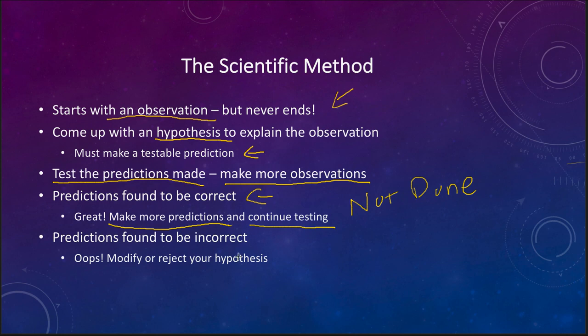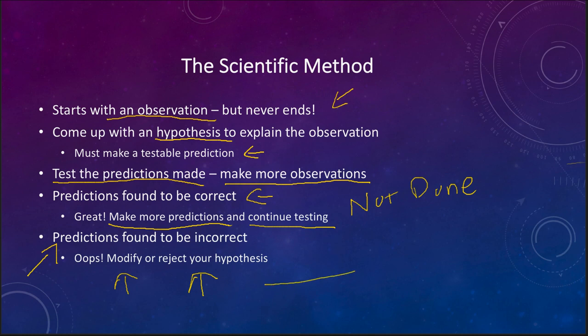Or you may find that your predictions were incorrect. That leaves you with a couple of options: you can modify the hypothesis to fit your observations, or if things are bad enough, you might have to reject your hypothesis altogether and go back to come up with a new one that explains both your original observation and your new observations.